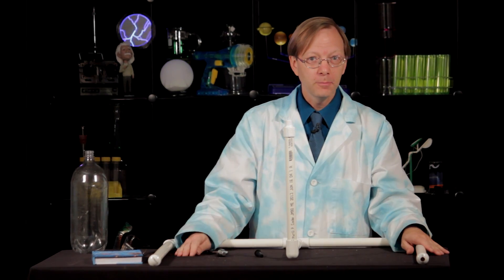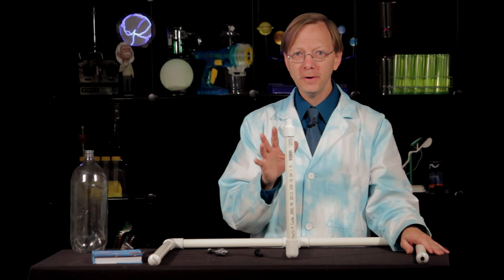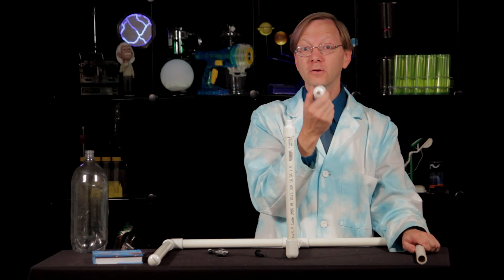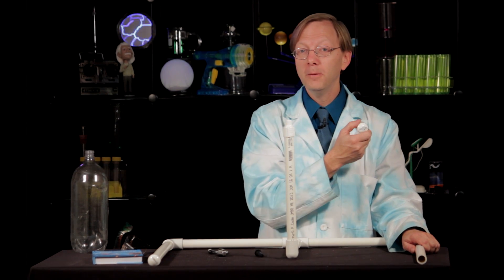All right, well now we've sort of got it loosely set up, but before we glue it in place permanently, we need to drill a hole in one of the end caps. And this is where your bicycle valve is going to go so that we can pump it up full of air.